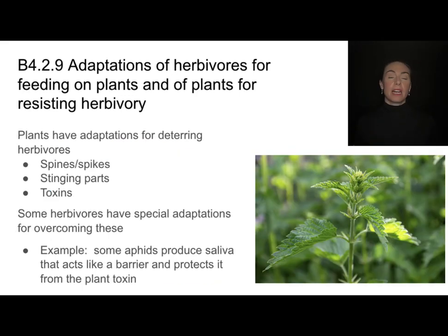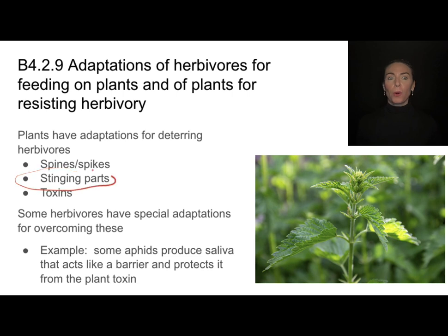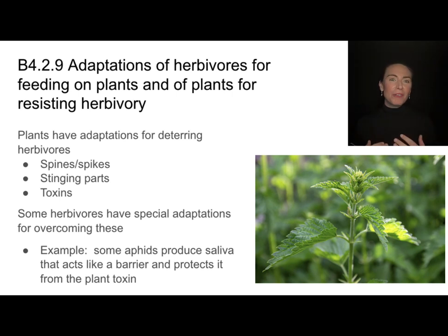Just as herbivores have adaptations for eating plants, plants have adaptations to resist being eaten by herbivores. Some of those adaptations include having spines or spikes, having stinging parts, or being able to produce toxins — whether poisonous or stinging like the stinging nettle plant. There are many different varieties of deterrent methods that plants have evolved. In this back and forth, some herbivores have adaptations to even overcome some of these plant adaptations.